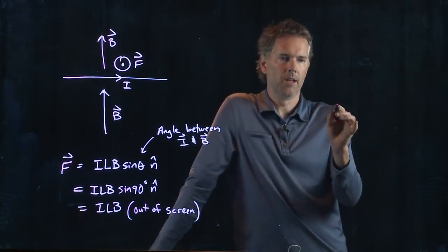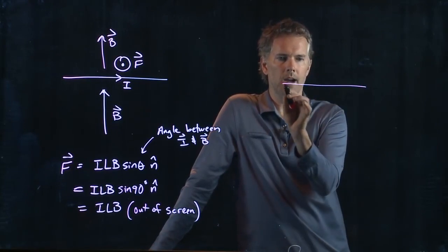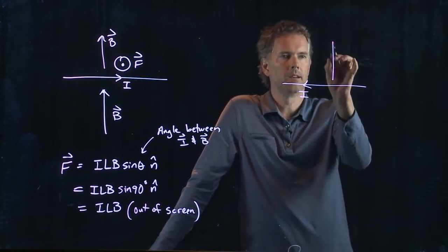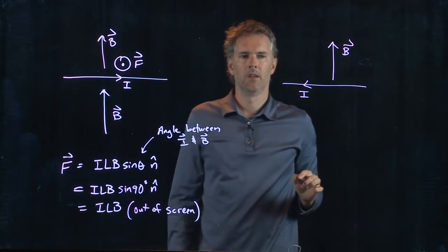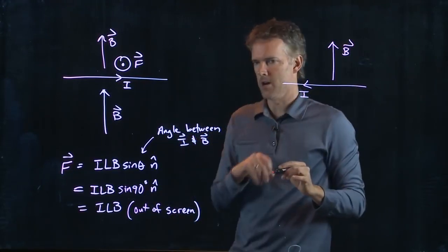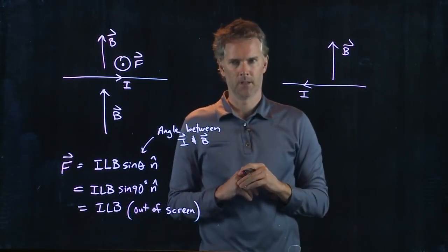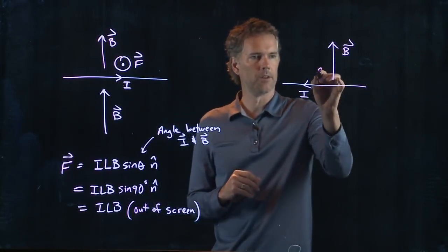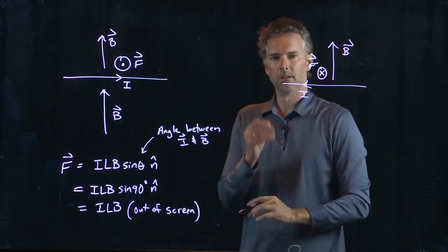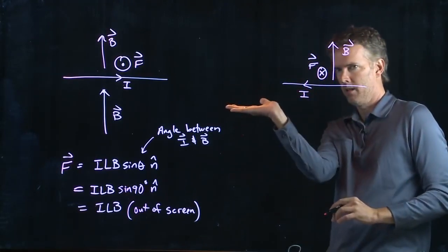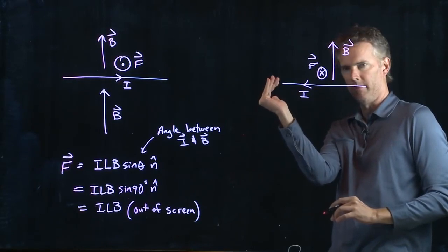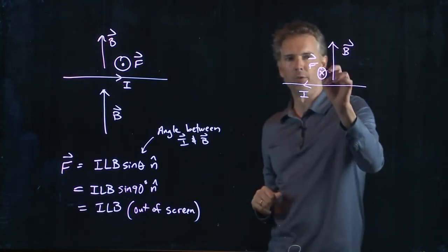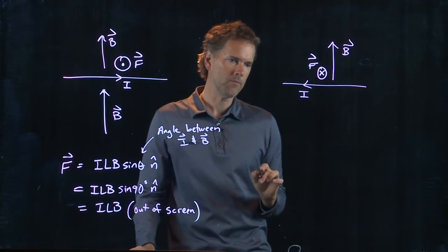So let's ask you this question. Let's say I have current I going to the left, and now I have B going up. What direction is the force on that wire? Into the screen or out of the screen? Into the screen. Let's see that. Put my fingers in the direction of I. Rotate my fingers bent into the direction of B. My thumb is pointing into the screen, into your computer monitor. And so the force is, in fact, into the screen.